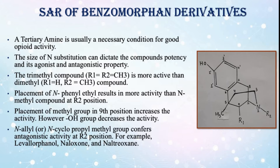N-allyl or N-cyclopropyl methyl group confers antagonistic activity at the R2 position. For example, levorphanol, naloxone, and naltrexone.